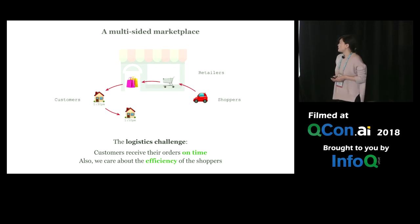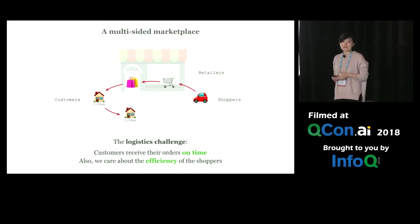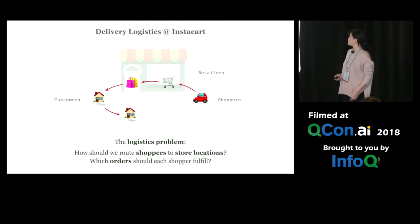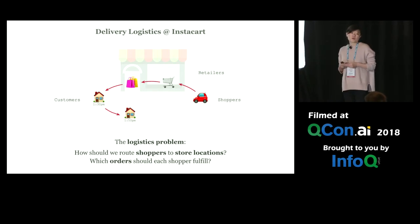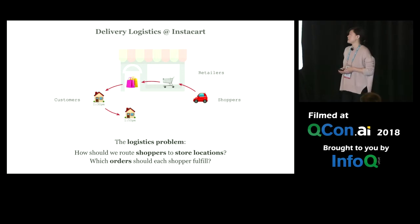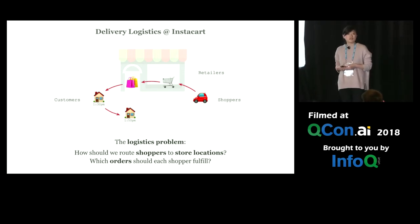The logistics challenge is to make sure customers receive their orders on time, and also we care a lot about the efficiency of the shoppers. The logistics problem is to decide, in real time, how we are going to route our shoppers to the store locations and which orders each shopper should fulfill.